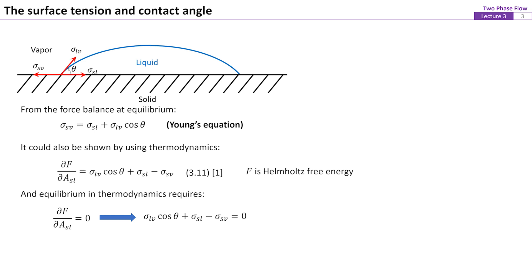The Young's equation can also be derived from a thermodynamics approach. The change of the Helmholtz free energy versus a change of the surface area of the solid covered by the liquid equals the change on the surface energies as shown by equation 11. For a system held at constant volume and temperature, thermodynamics requires that the free energy must be a minimum at equilibrium. Therefore, partial F partial ASL equals zero for the system at equilibrium and the resulted equation is just identical to the Young's equation that was derived from force balance.